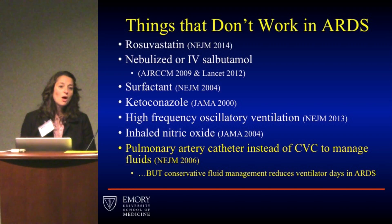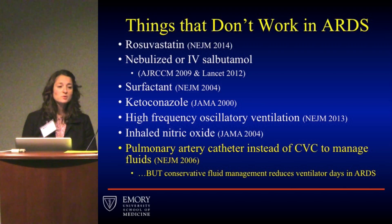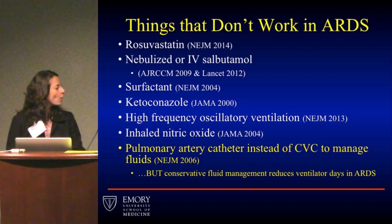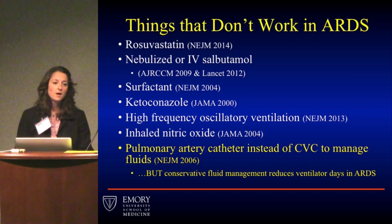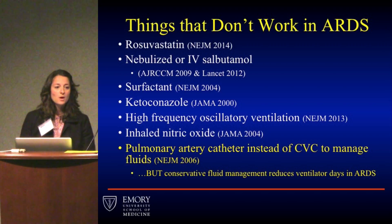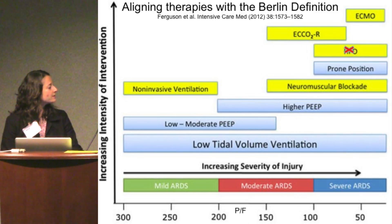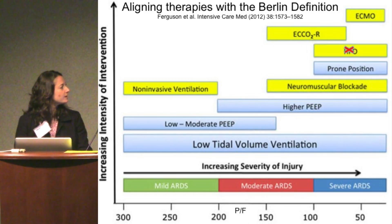Multiple studies on other therapeutic agents have not been positive, partly because of the limitations of the current definition and the lack of a biomarker for ARDS. The FACTT trial showed no benefit between PAC or central venous catheter insertion for ARDS management, but notably conservative fluid management — while not showing a mortality benefit — did get patients off the ventilator more quickly. Available management options aligned with the Berlin definition increase in intensity as severity increases, with interventions shown in yellow still needing more supporting data.